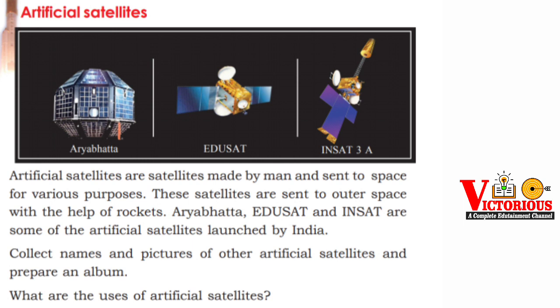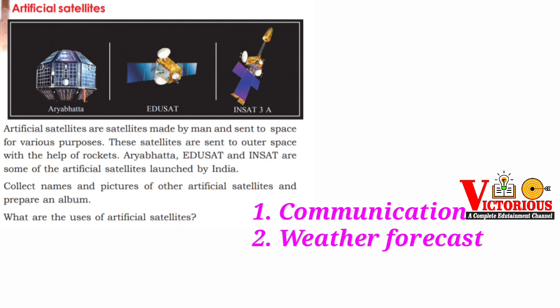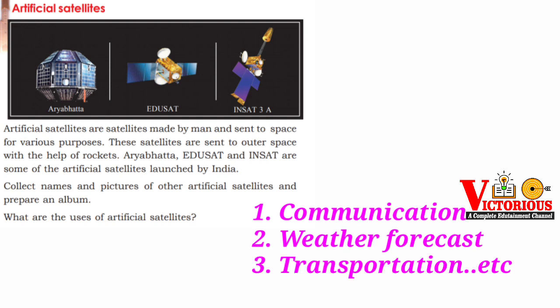What are the uses of artificial satellites? The first one is communication. The second is weather forecasting. The third is transportation. Satellites help us in all these areas.